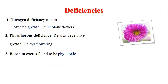There are some nutrient deficiencies in China Aster. Nitrogen deficiency causes stunted growth and dull color of flowers. Phosphorus deficiency retards vegetative growth and delays flowering. If boron is in excess, it is found to be phytotoxic.